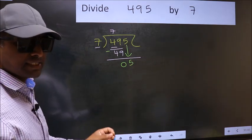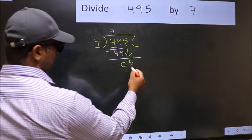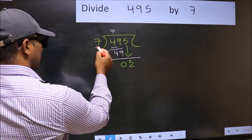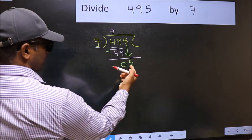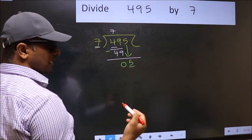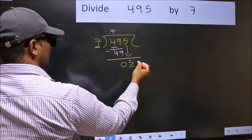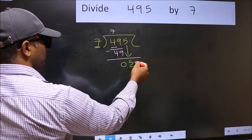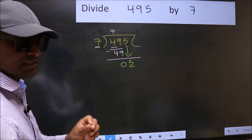And the mistake is this. Here we have 5 and here 7. 5 is smaller than 7. So what many do is, they directly put dot and take 0.